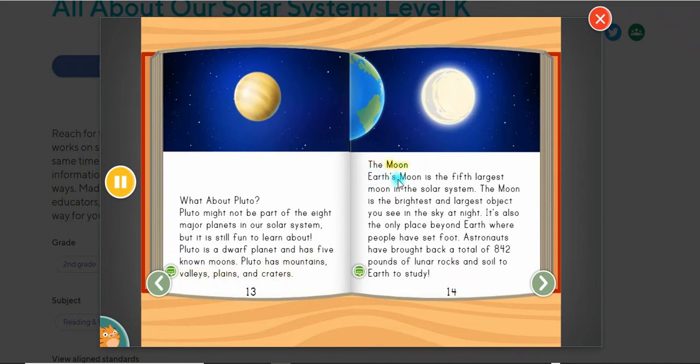The moon. Earth's moon is the fifth largest moon in the solar system. The moon is the brightest and largest object you see in the sky at night. It's also the only place beyond Earth where people have set foot. Astronauts have brought back a total of 842 pounds of lunar rocks and soil to Earth to study.